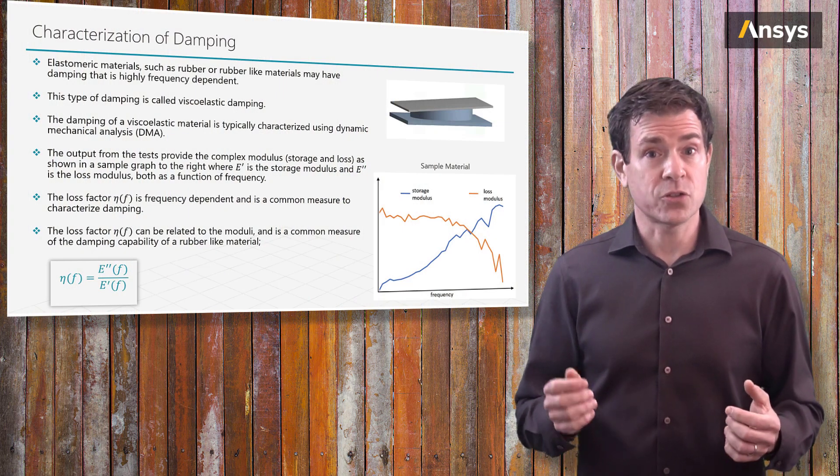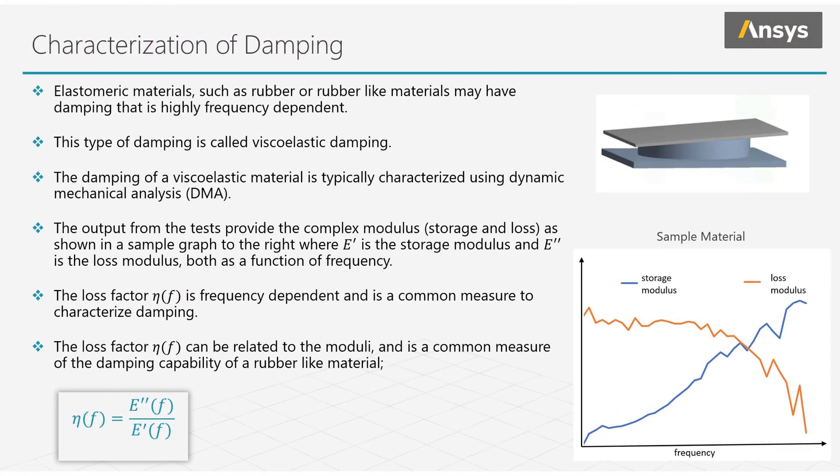Typically, a sample of the material is put into a testing machine that can compute what is called DMA or dynamic mechanical analysis. The output from this test includes the storage and the loss moduli, which vary as a function of frequency.